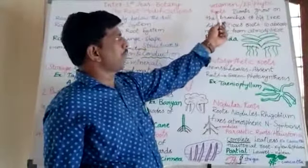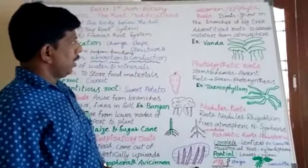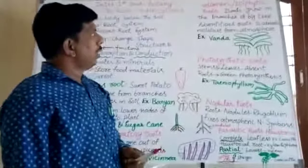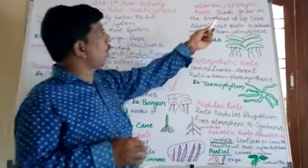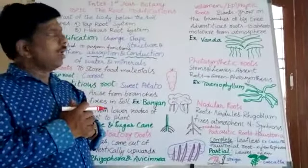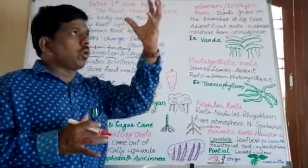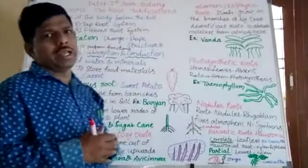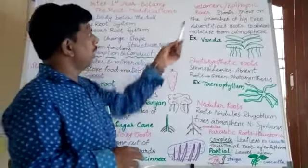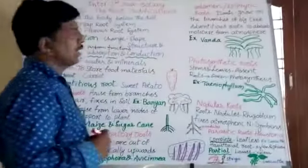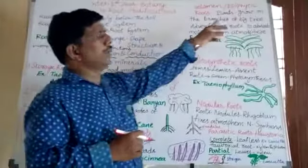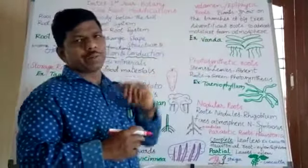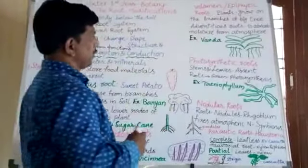Next are velamen roots, or epiphytic roots. Plants which grow on the branches of big trees have roots that hang freely in the air to absorb moisture from the atmosphere. They are known as velamen roots or epiphytic roots. For example, Vanda.